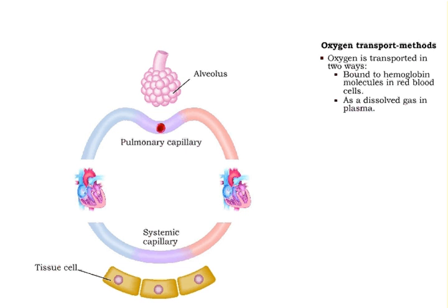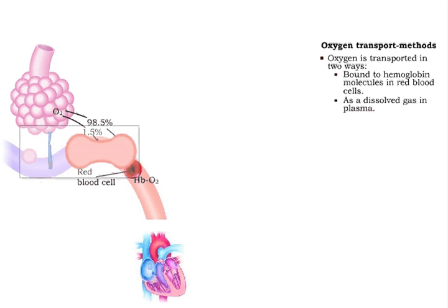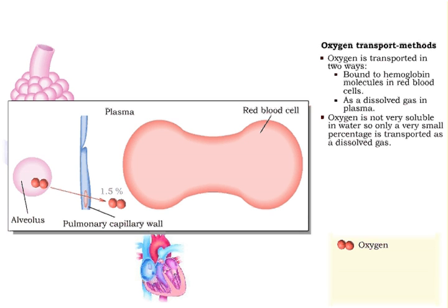Oxygen is picked up in the lungs and transported to the other body tissues in two ways: attached to hemoglobin molecules in red blood cells, and as a dissolved gas. Oxygen is not very soluble in water, so only a very small percent of the oxygen is transported as a dissolved gas.